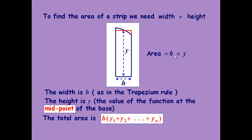So we end up with an area of h times y and a very simple formula. h is always the same, so it's just h times the sum of all the y values.